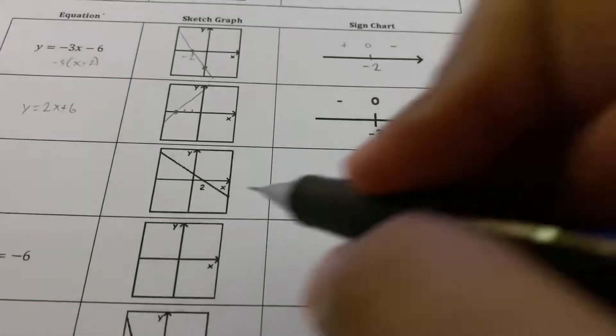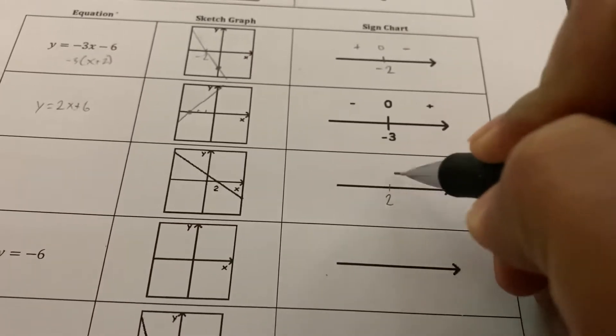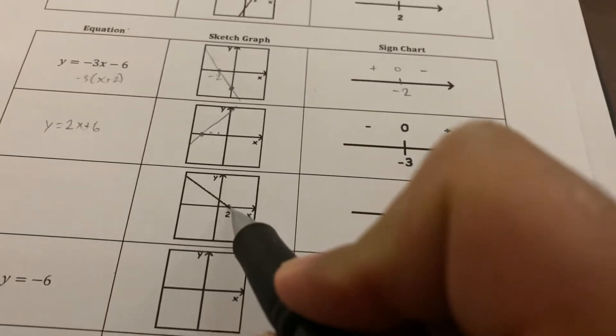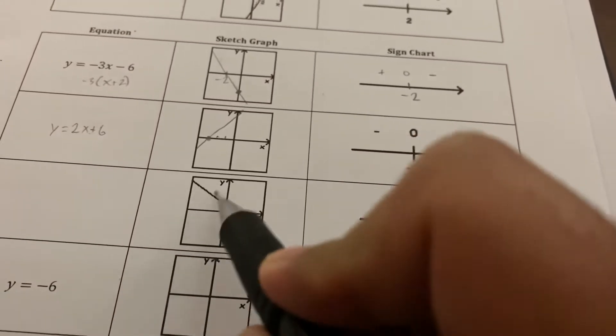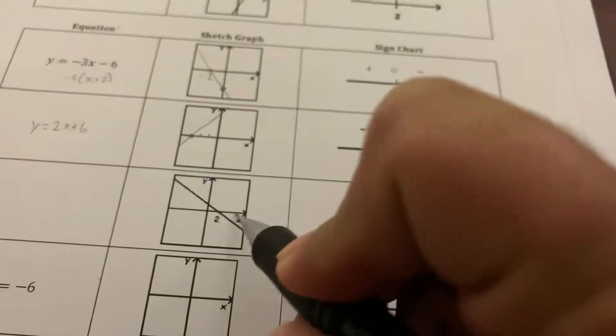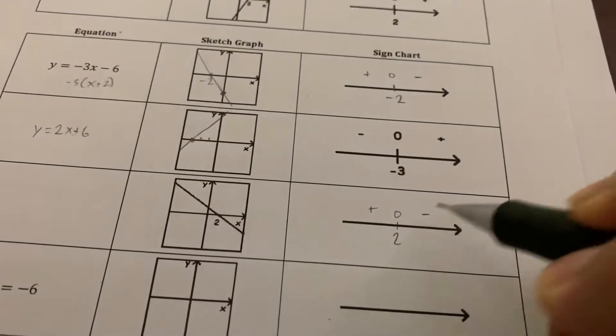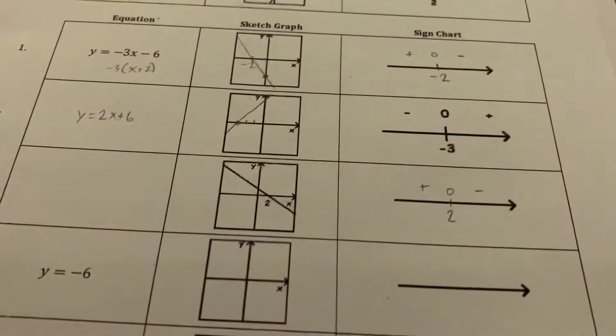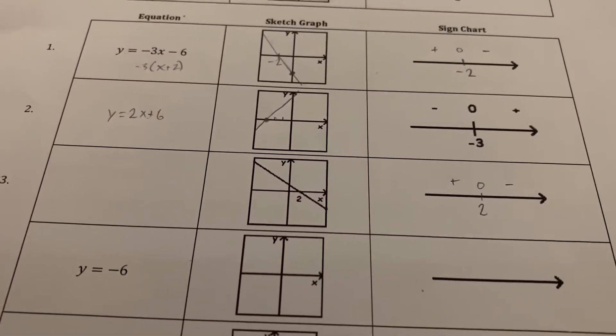Okay, for number three we're given the x-intercept is two here, and then we can see that to the left of two the graph is up on the positive side, and then to the right of it it's down below on the negative side. So there we have our sign chart, now we just need to come up with the equation for it.